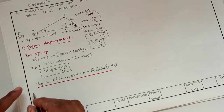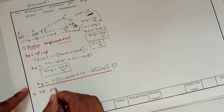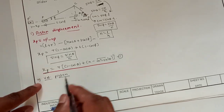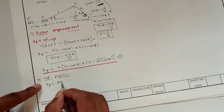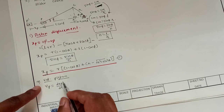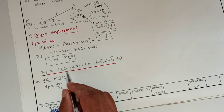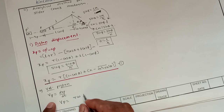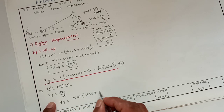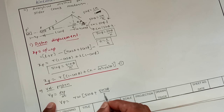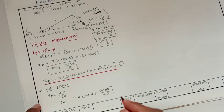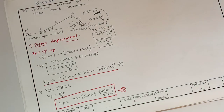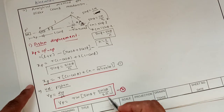Next, piston velocity. When we differentiate equation 1 with respect to time we get the velocity of the piston. Piston velocity equals the time derivative of its displacement. Differentiating gives velocity of piston VP = Rω[sin θ + sin(2θ)/(2N)]. This is equation 2, which gives the velocity of the piston.